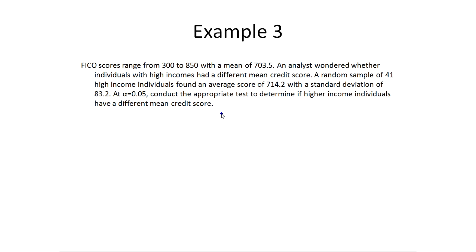This is actually a two-tailed test we did before. This is where we were trying to determine if the mean credit score for high income individuals was different than what it is for everybody else. So we were wondering is the mean for high income different than 703.5 versus the same. Last time we did a p-value method on this. This time we're going to use a rejection region. And remember in this case, sigma is once again unknown, we only have the sample standard deviation, so that means we have to use a t-test again.